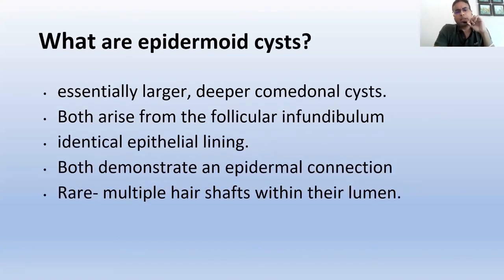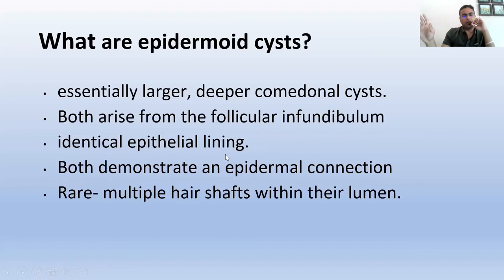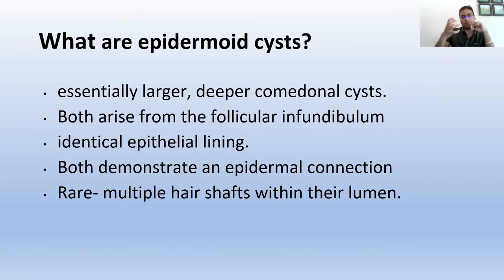What are epidermoid cysts? They resemble both milia and comedones, but more so comedones. They both arise from the follicular infundibulum with an identical epithelial lining, and like comedones they demonstrate an epithelial connection. Though rare, hair shafts can be seen within the lumen. The difference is that epidermoid cysts are larger and deeper. Once these comedonal cysts enlarge and become deep and dermal, they destroy the underlying hair follicle — the hair root regresses or gets destroyed — though the attachment to the epidermis is usually retained.